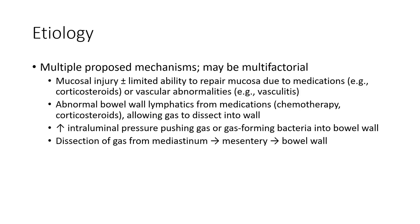Multiple proposed mechanisms may be multi-factorial. Mucosal injury, plus or minus limited ability to repair mucosa due to medication — for example, corticosteroid or vascular abnormality, vasculitis — or abnormal bowel or lymphatics from medication such as chemotherapy or corticosteroid, allowing gas to dissect into the wall. Increased intraluminal pressure pushing gas or gas-forming bacteria into the bowel wall. Dissection of gas from the gastrointestinal tract to the mesentery and to the bowel.